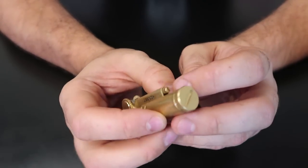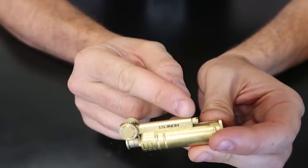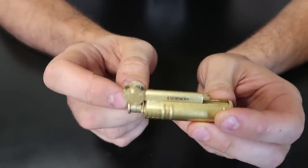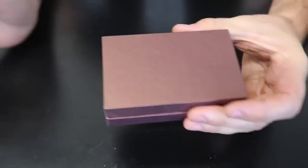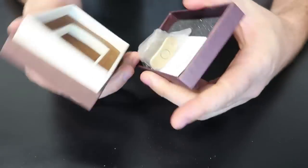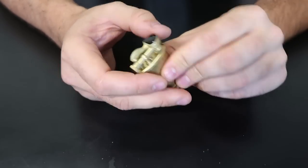And then here you can open this screw up and that way you can replace the striker. Okay, let's see what else I have here. What is this? How does this work?